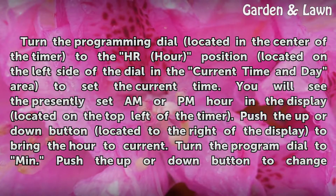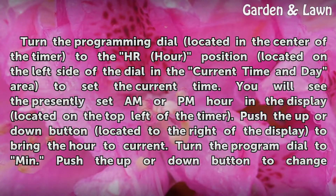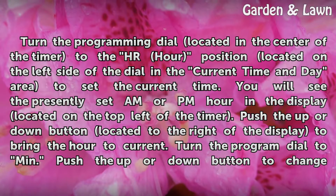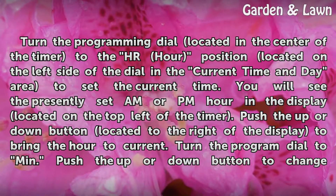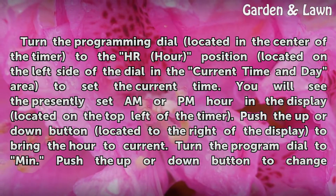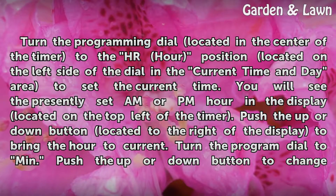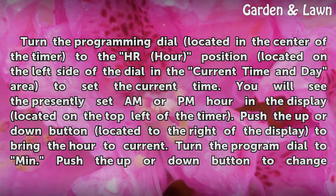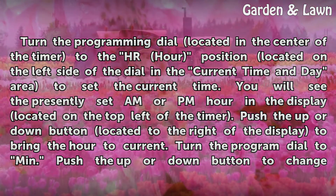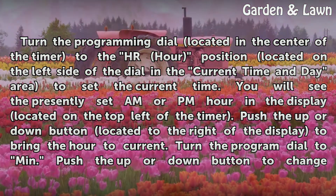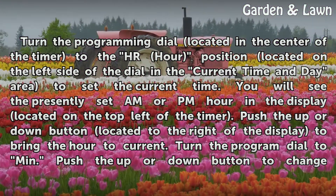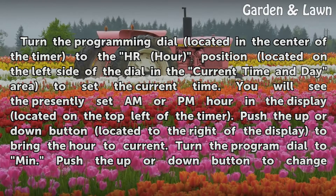Turn the programming dial located in the center of the timer to the HR hour position located on the left side of the dial in the current time and day area to set the current time. You will see the presently set AM or PM hour in the display located on the top left of the timer. Push the up or down button located to the right of the display to bring the hour to current.